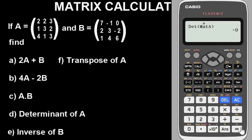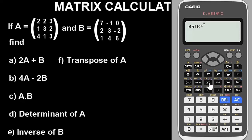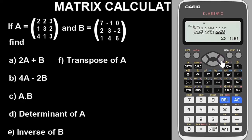For part E, find the inverse of matrix B. Go to option, select matrix B (option 4), then press the inverse button — that's the x to the power of negative 1 button. You'll see Matrix B to the power of negative 1, which is the inverse of matrix B. Press equals to get the answer — these are the values for the inverse of this matrix.